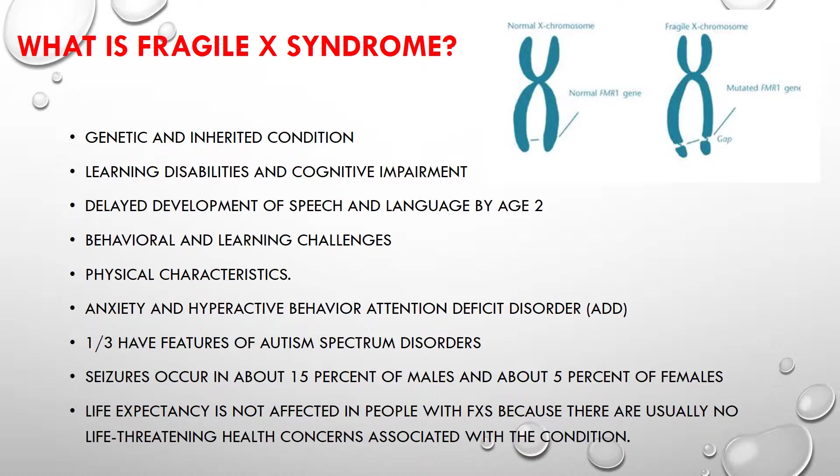This is located at the bottom end of the X chromosome. A typical person would have about 5 to 44 repetitions, a partial carrier has about 55 to 200 repetitions, and a full mutation has an excess of 200 CGG repetitions. The expansion leads to silencing of this FMR1 gene, which then reduces or completely eliminates the production of its associated gene protein, the FMRP.